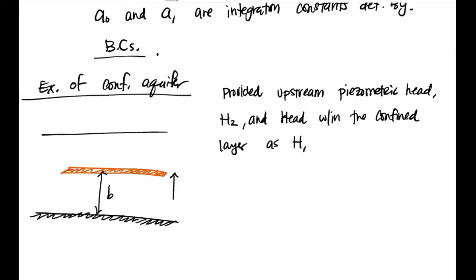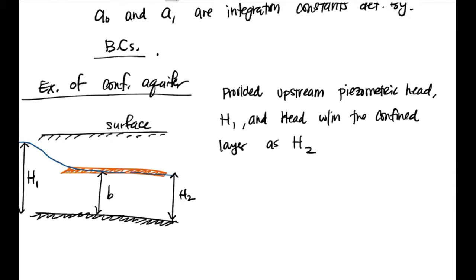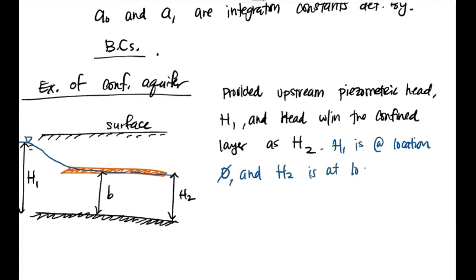Actually, I switched those — this is supposed to be H2 and this is supposed to be H1. So essentially you have a surface with a water table that changes laterally. H1 is at location X = 0, and H2 is at location X = L, so the distance between these two observations is just L.